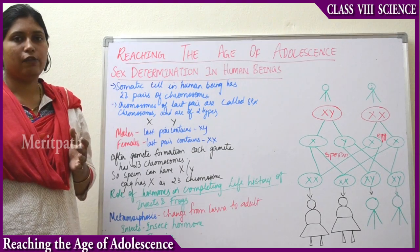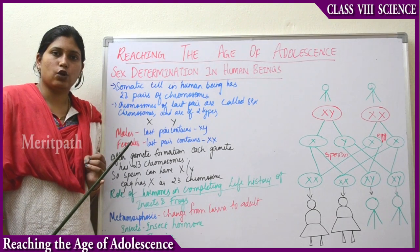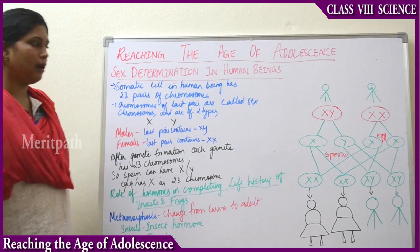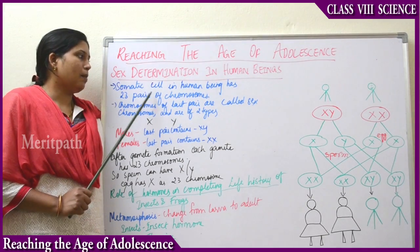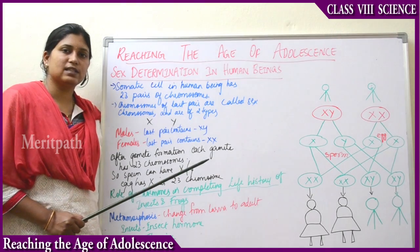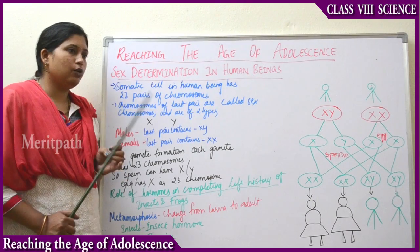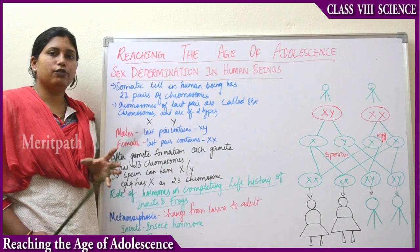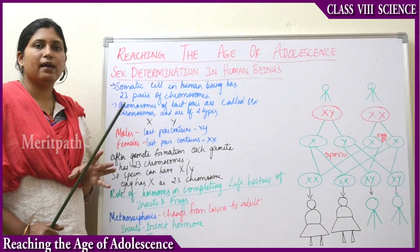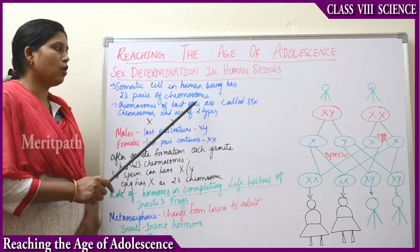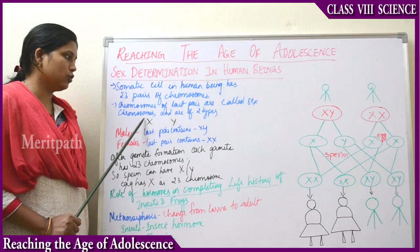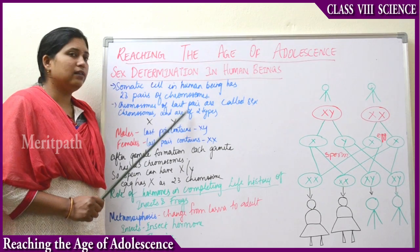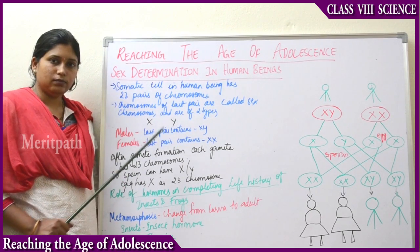The remaining one pair in males is either X or Y — so males have XY. Whereas that remaining one pair in females is X and X — so females have XX. The last pair of chromosomes, that is two chromosomes, are known as sex chromosomes. These are of two types: X and Y. In males the last pair contains one X and one Y, whereas in females the last pair contains only X and X.